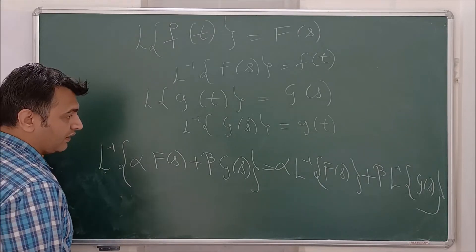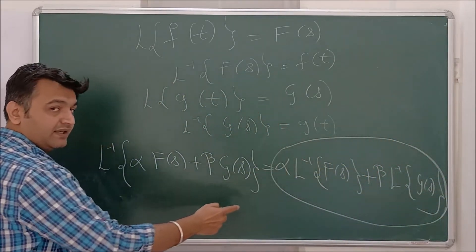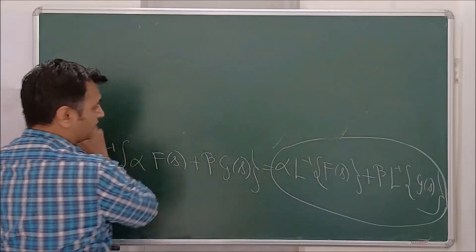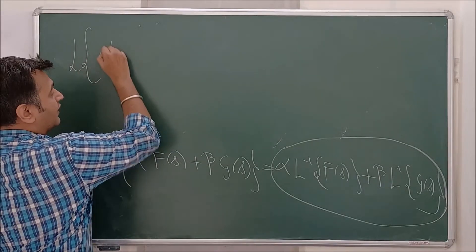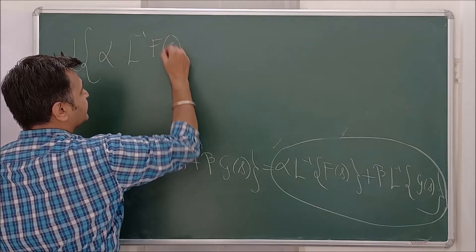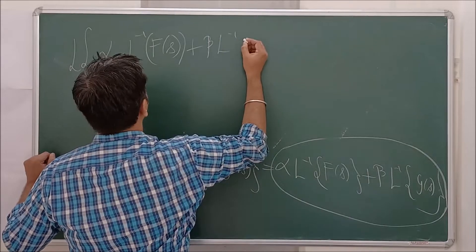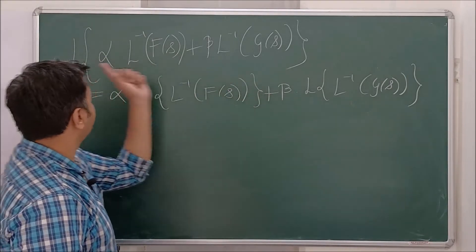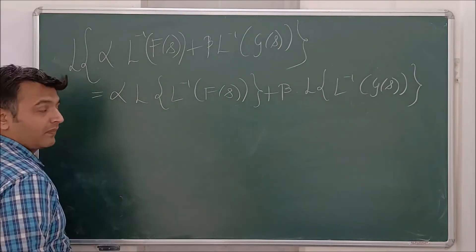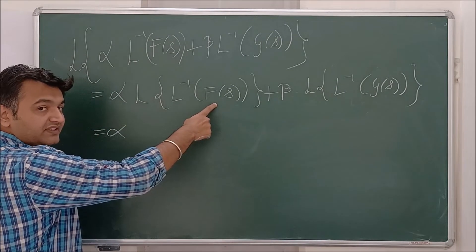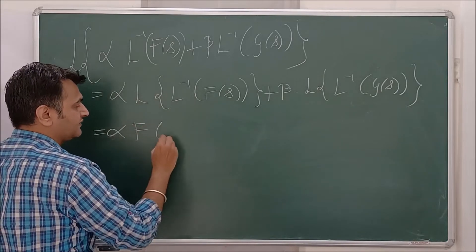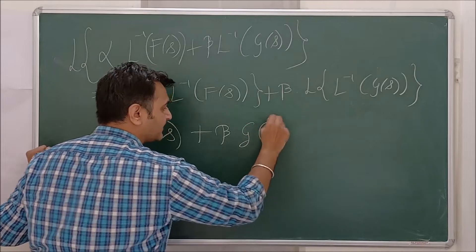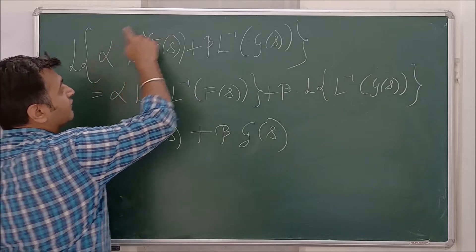To prove this, we apply Laplace to both sides and use the fact that Laplace is linear in nature. So we compute Laplace of alpha times [Laplace inverse of F(s)] plus beta times [Laplace inverse of G(s)]. Using linearity of Laplace, this equals alpha times Laplace of [Laplace inverse of F(s)] plus beta times Laplace of [Laplace inverse of G(s)]. Now Laplace inverse of F(s) is f(t), and Laplace of f(t) is F(s), so those cancel. Similarly for G(s).